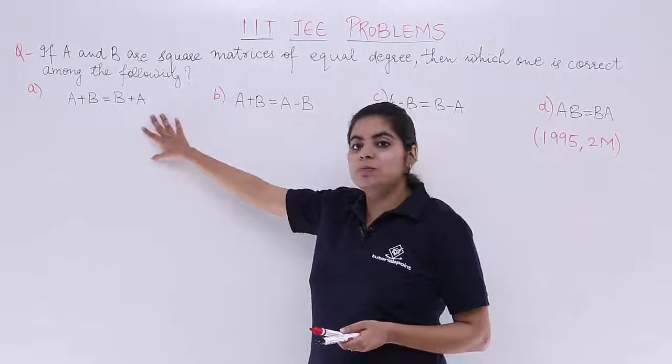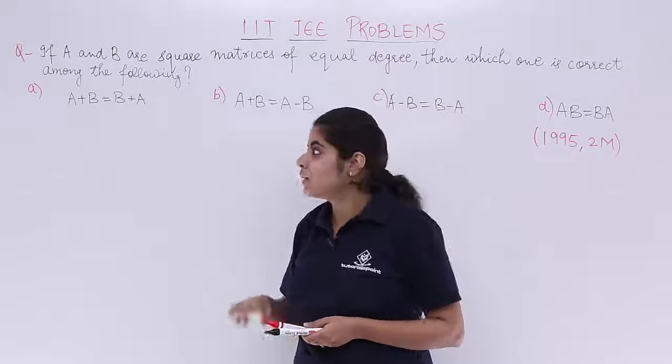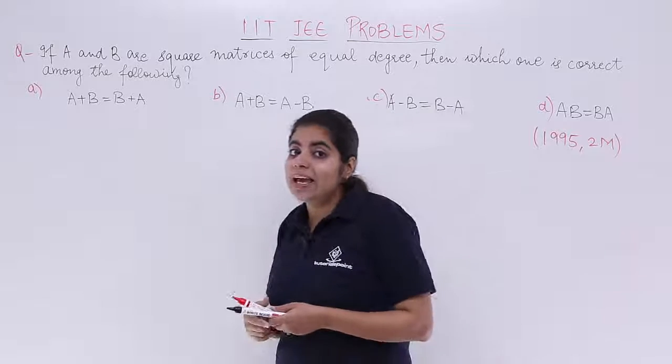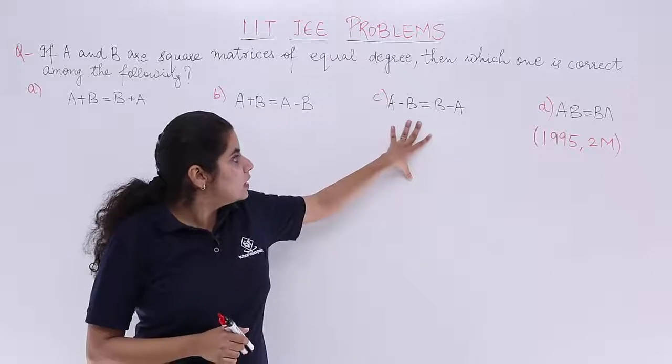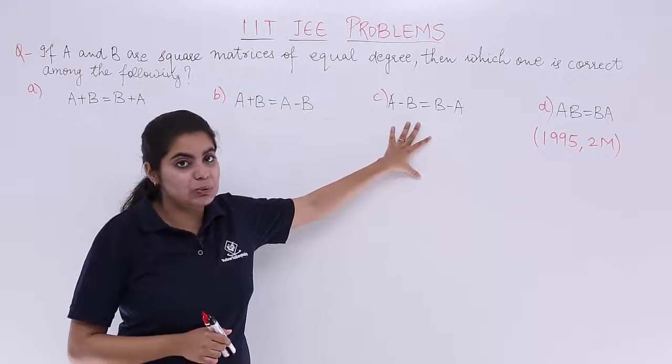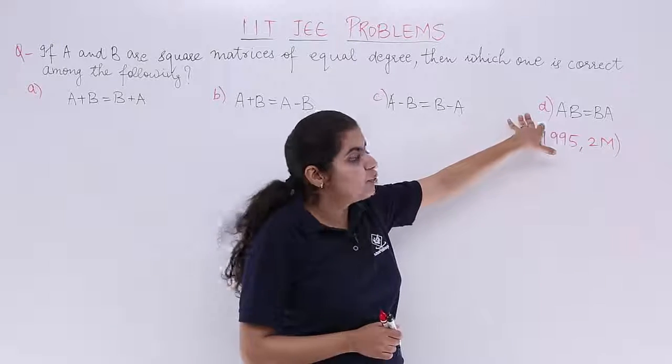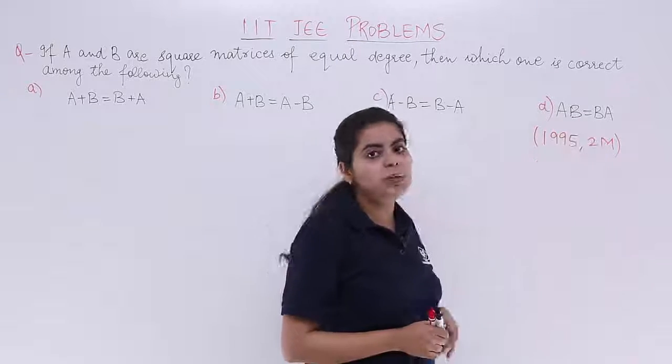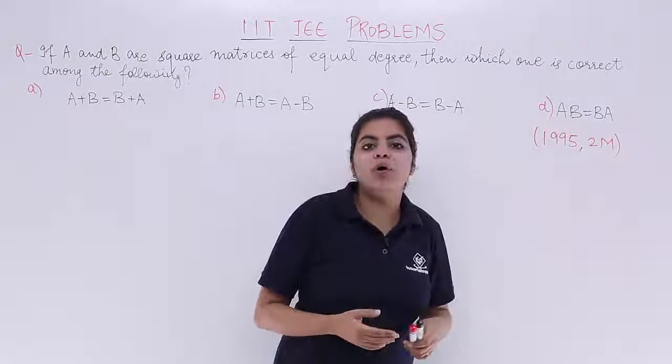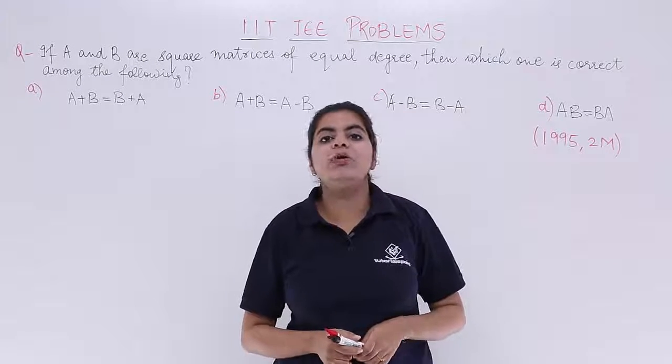The first option is A+B = B+A. The second option is A+B = A-B. The third option is A-B = B-A, and the fourth option is AB = BA.